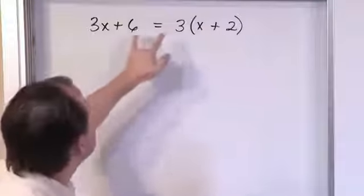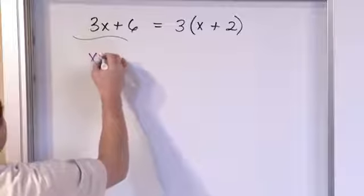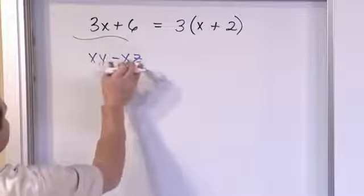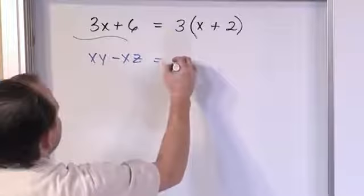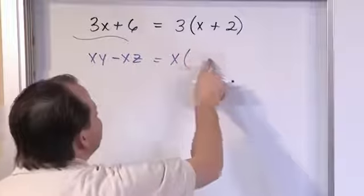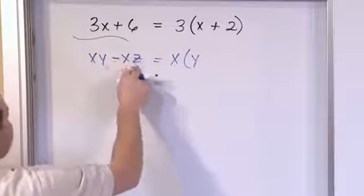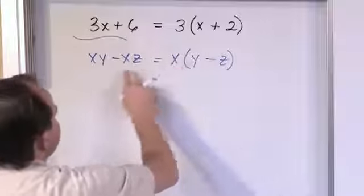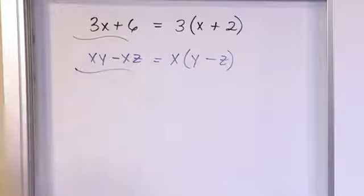Factoring means reaching in, pulling out what's common, and ensuring what's left inside the parenthesis makes sense so that reverse multiplication gives you back what you started with. For example, x times y minus x times z — the only thing common to both terms is x. Pull it out, open parentheses, and what's left is y minus z. Check: x times y minus x times z. That's exactly what we started with.